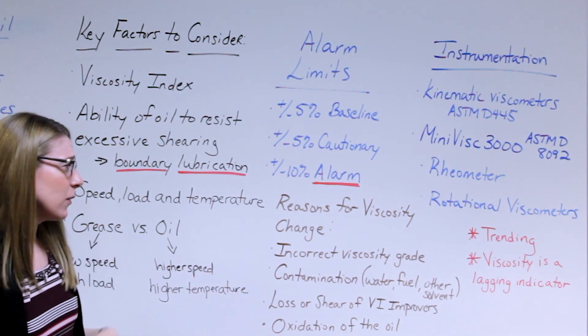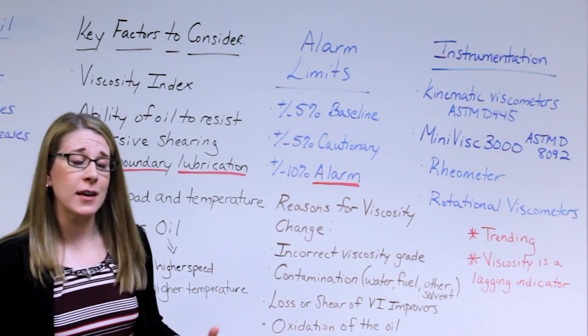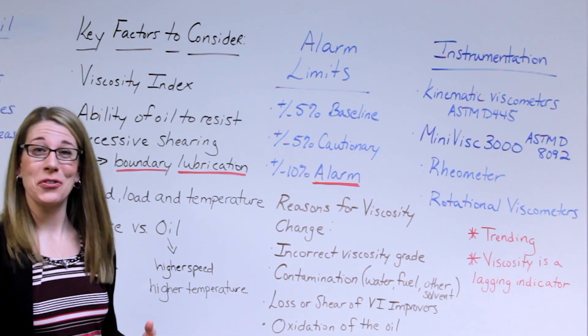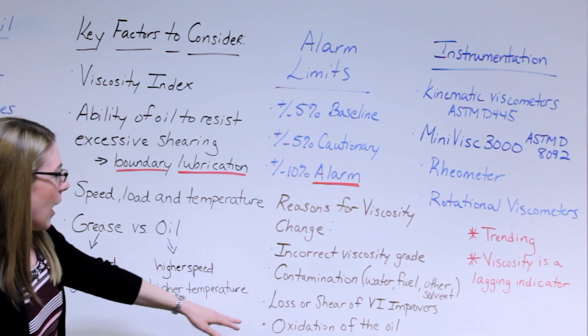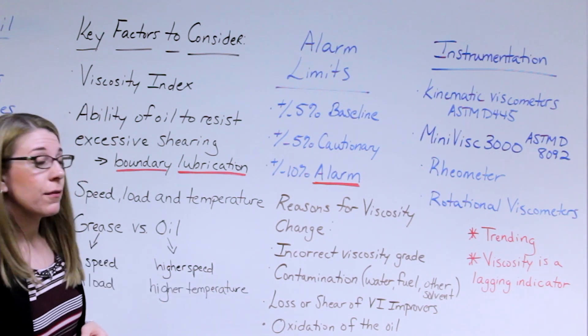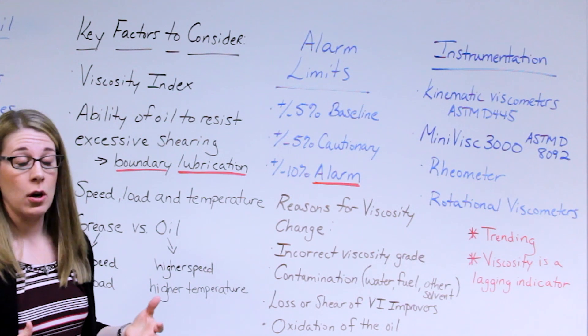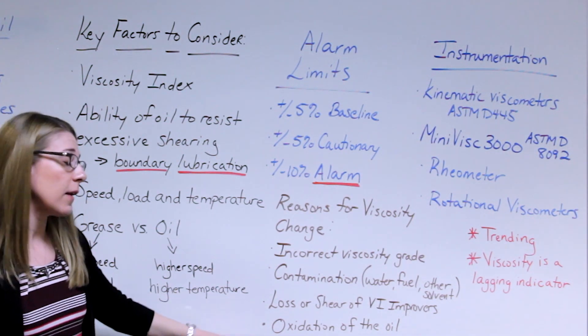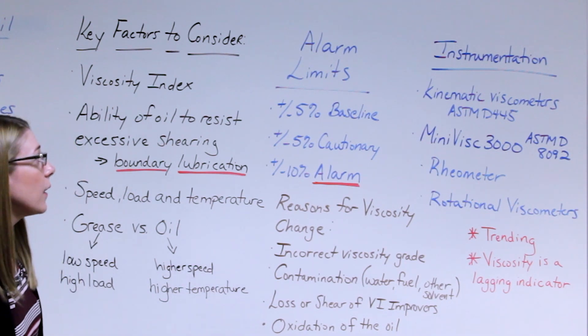Secondly contamination. Water, fuel, other solvents getting into the oil will cause a change in viscosity, but you might see that in other instrumentation. And then loss or shear of VI improvers can cause changes in viscosity. And finally oxidation of the oil. Typically you'll see a viscosity increase when the oil starts to oxidize.